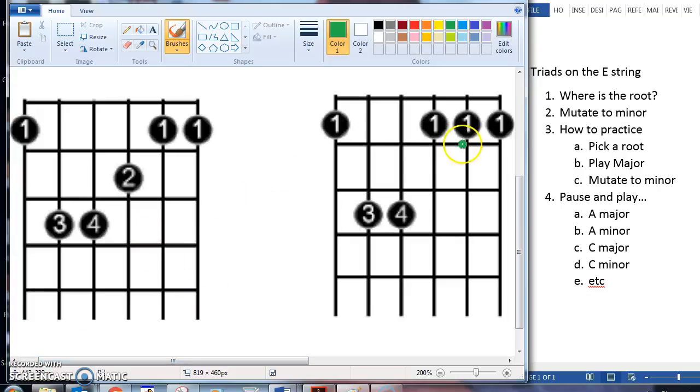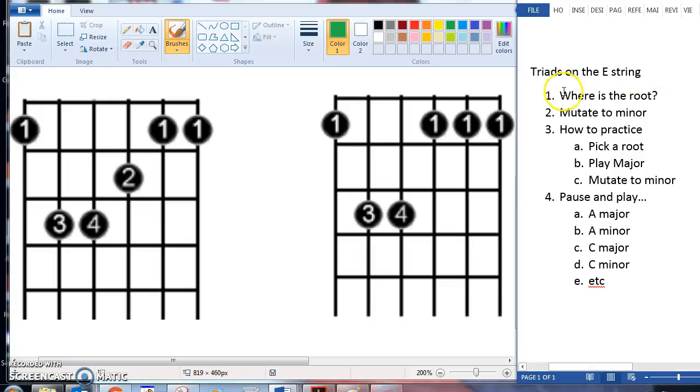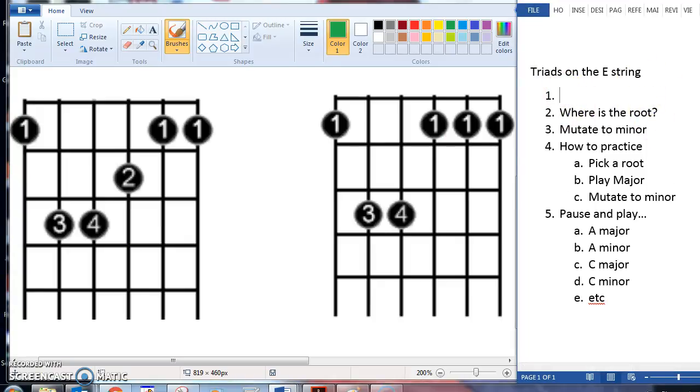So the first thing you need to know is what is a major triad. A major triad is 1 3 5 from a major scale.